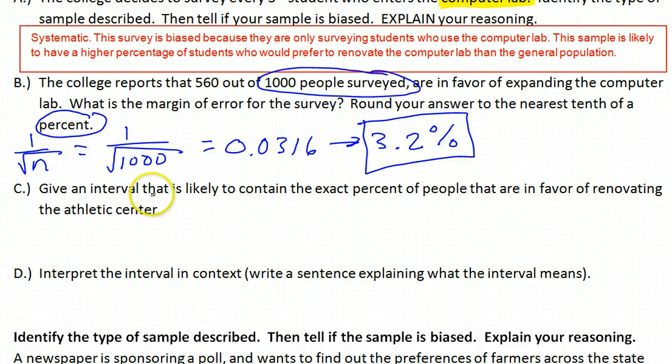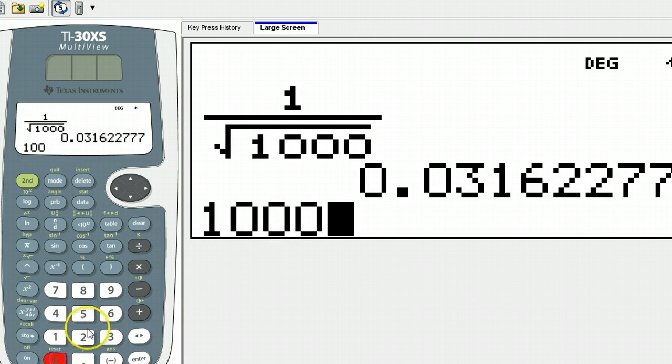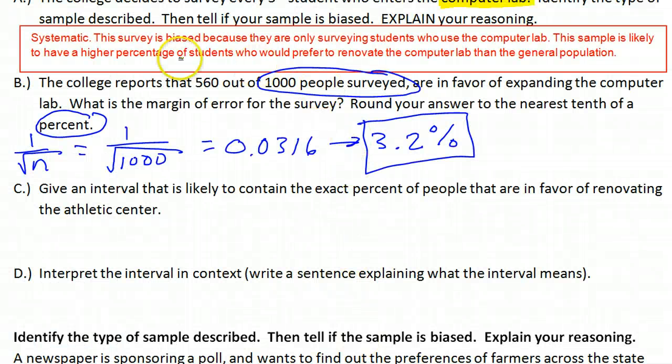Give an interval that's likely to contain the exact percent of people that are in favor of renovating the athletic center. Be careful because here they were talking about in favor of expanding the computer lab. If 560 people were in favor of expanding the computer lab, that means 440 people voted for the athletic center. 1,000 minus 560. Be careful. I'm afraid if this were a quiz, a bunch of people would have just used the 560 without reading the question carefully.